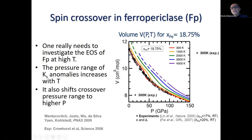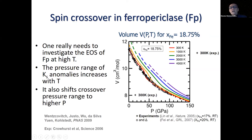The red compression curve at 300 Kelvin shows our prediction: the ferropericlase is first in the high-spin state, then becomes more compressible in the spin crossover region, then enters the low-spin region. As you increase the temperature, this crossover broadens and moves to higher pressures.